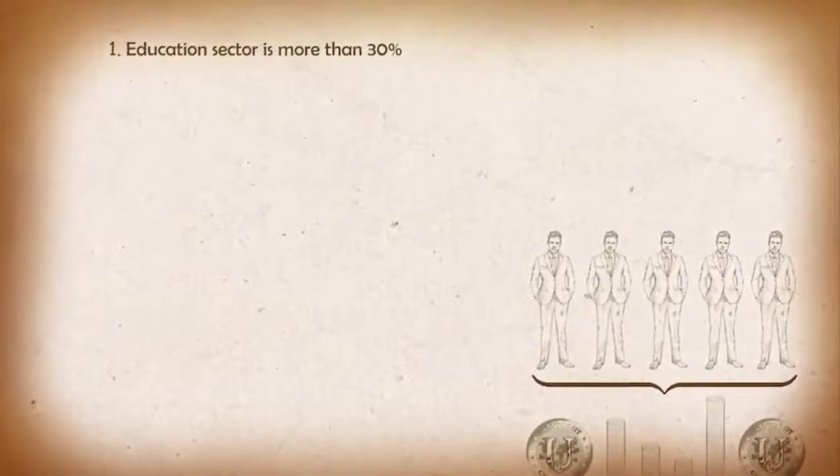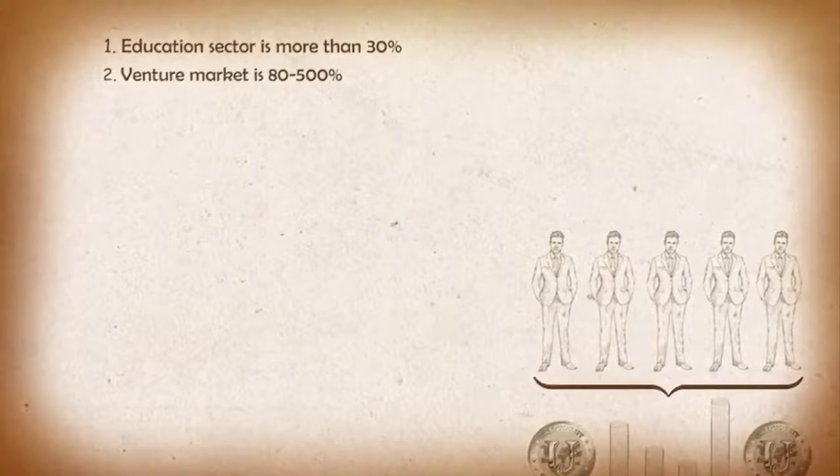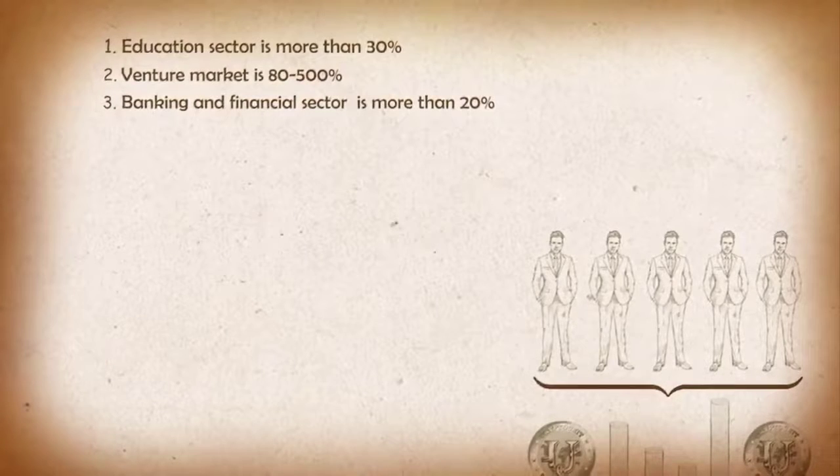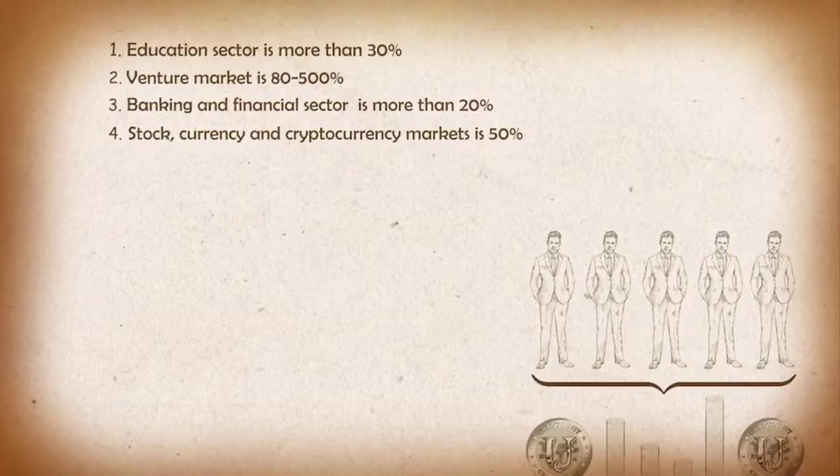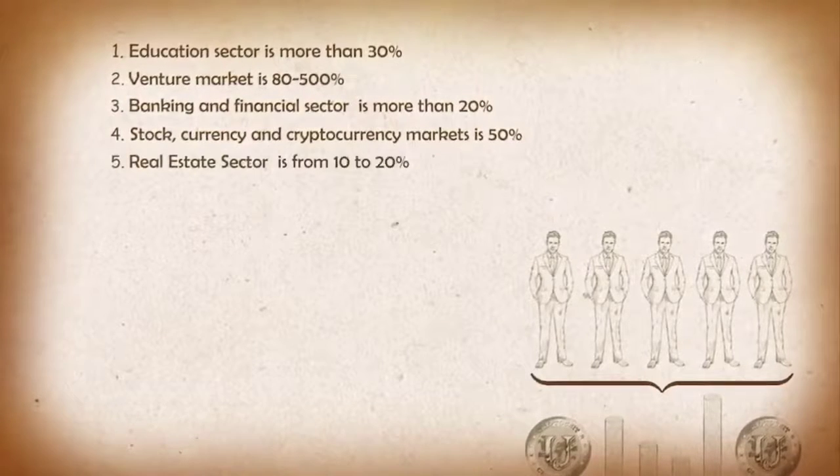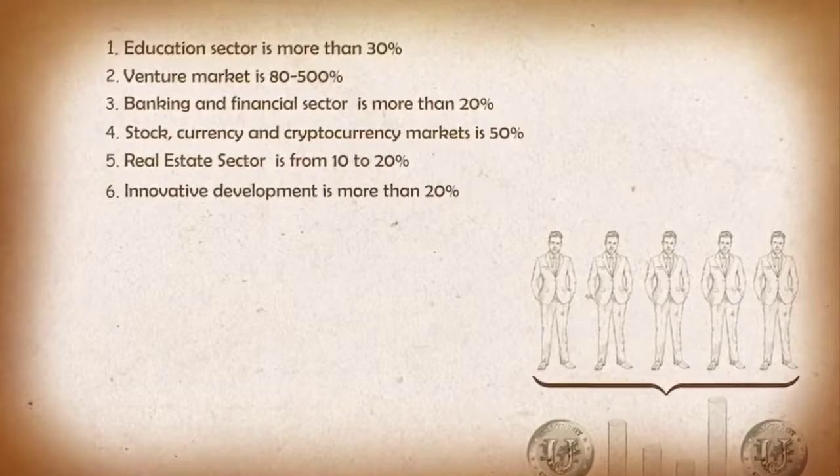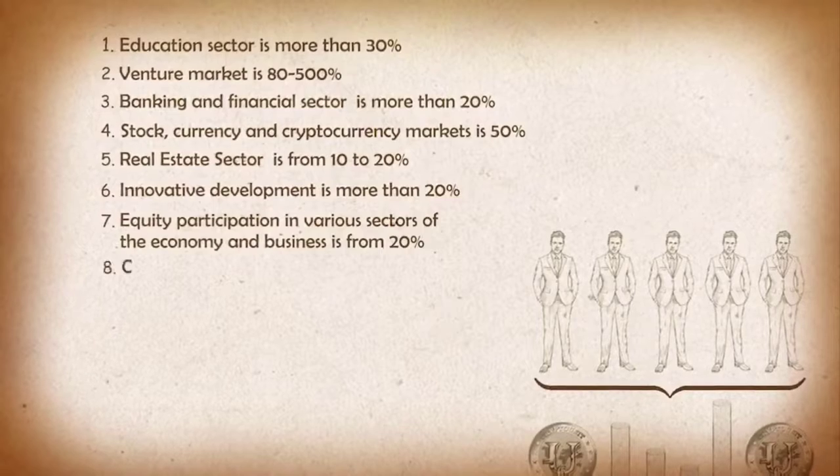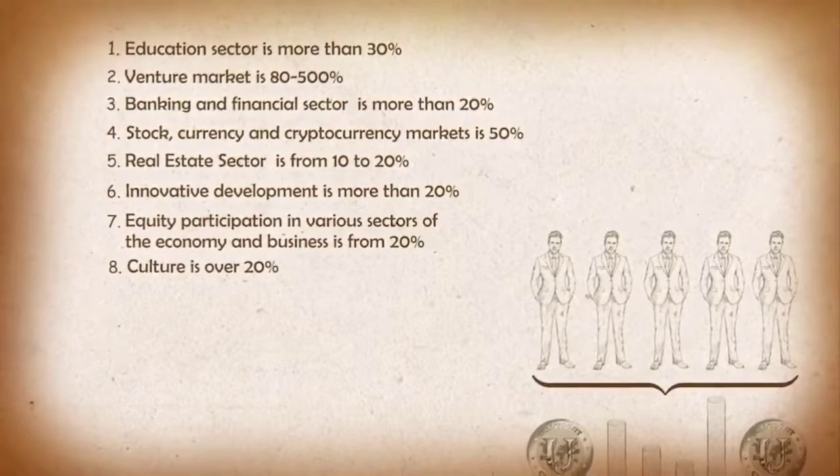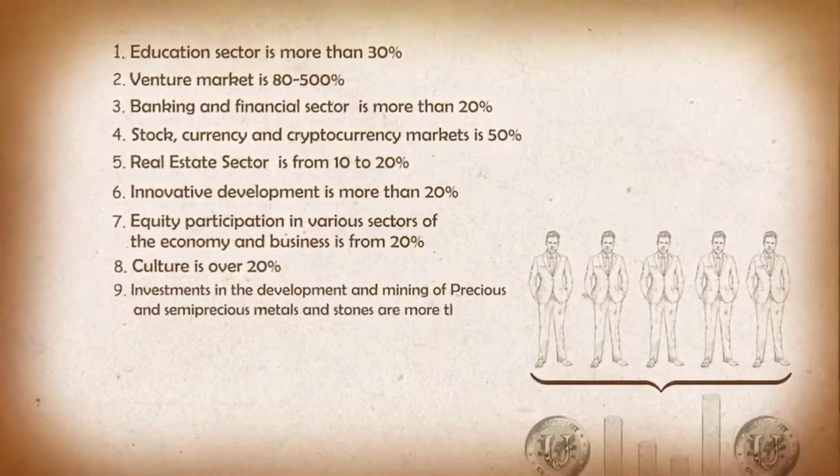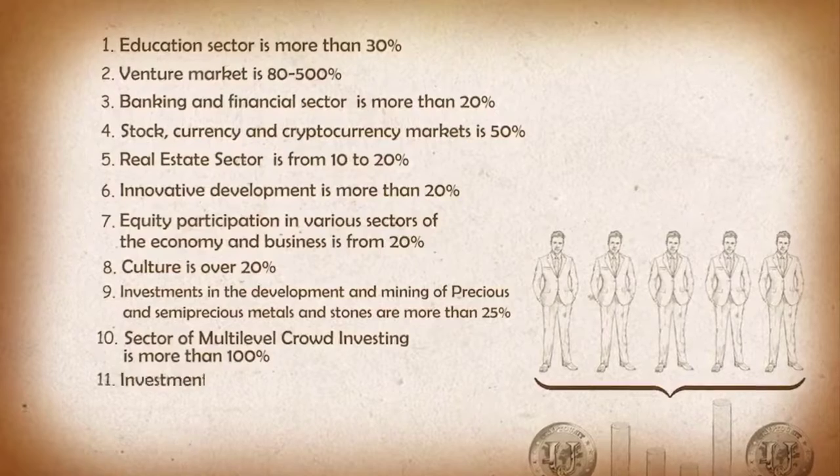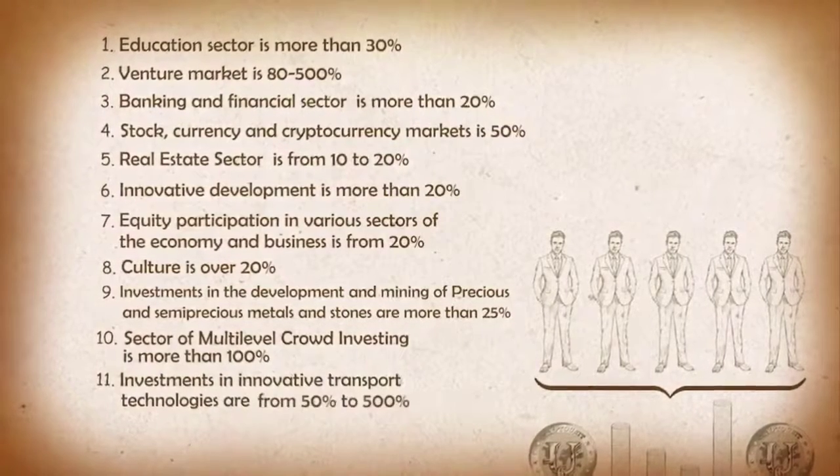Let's suppose the company invests in the education sector, which should give us more than 30 percent a year. In the venture capital market, which is able to give more than 80 to 500 percent a year. In the banking and financial sector, which can give us more than 20 percent per year on currency exchange and brokerage operations. The stock, currency, and crypto markets can give us more than 50 percent a year. The real estate sector will give us from 10 to 20 percent per year. Innovative development gives us more than 20 percent per year. Equity participation in various sectors of the economy and businesses gives us an income of 20 percent a year. Culture can provide us with a yield of more than 20 percent a year. Investments in the development and extraction of precious and semi-precious metals and stones, more than 25 percent a year. The sector of multi-level crowd investing, more than 100 percent per year. Investments in innovative transport technologies will be able to give more than 50 to 500 percent a year. The agriculture and farming sector can yield more than 30 percent a year.